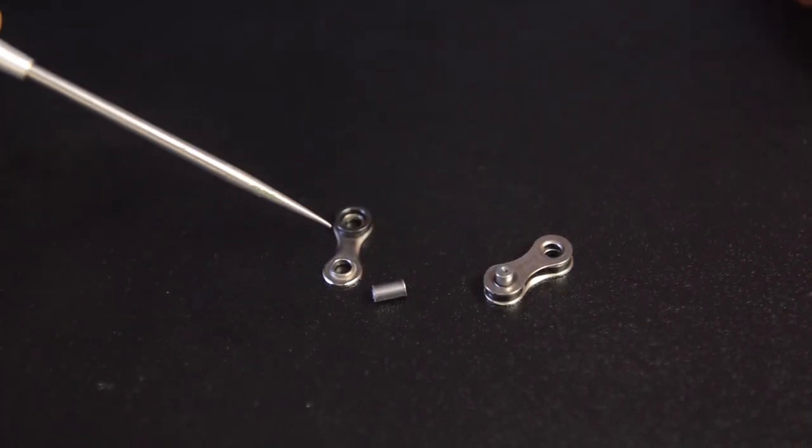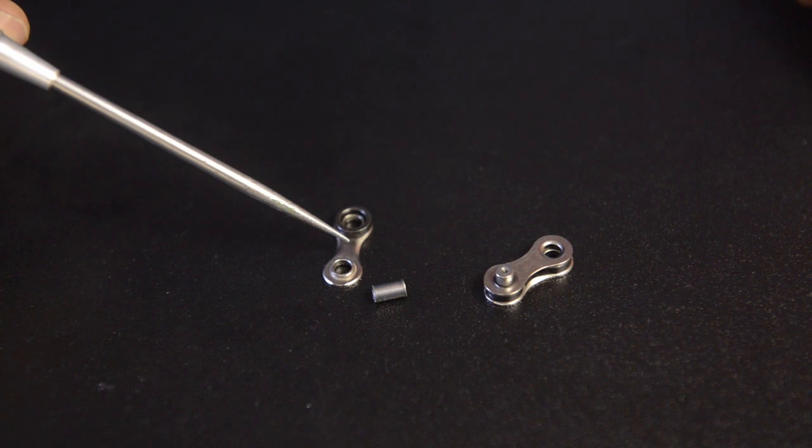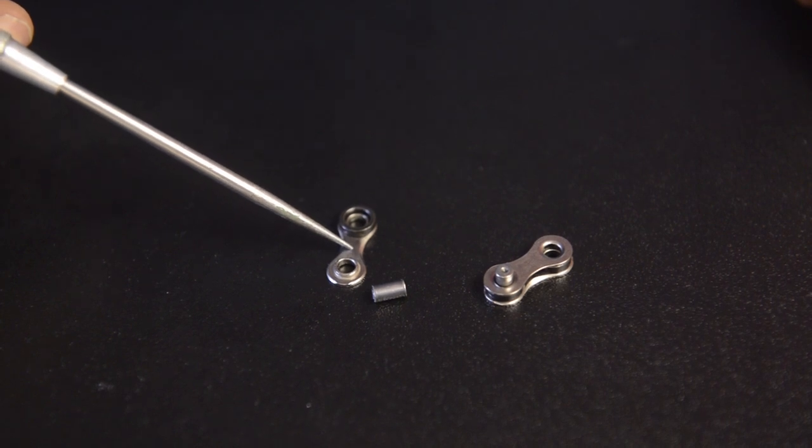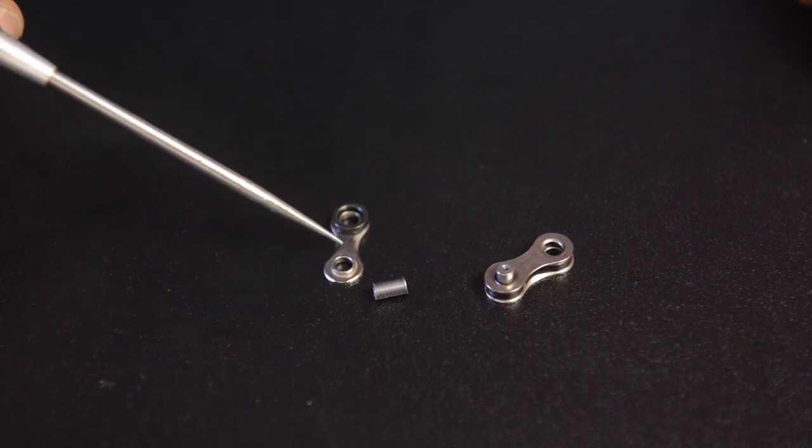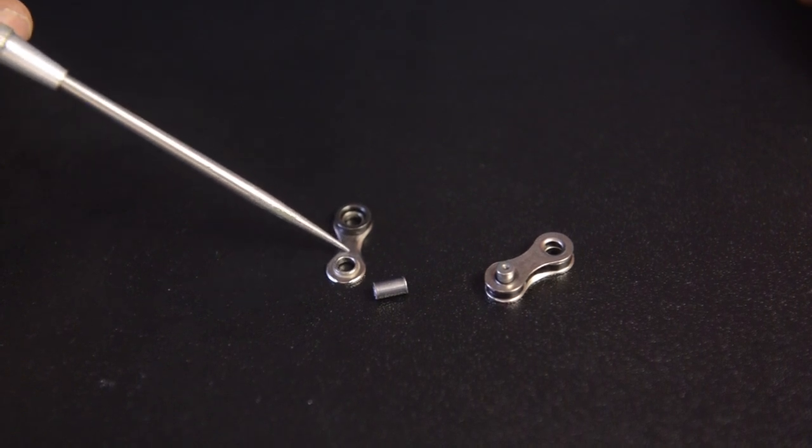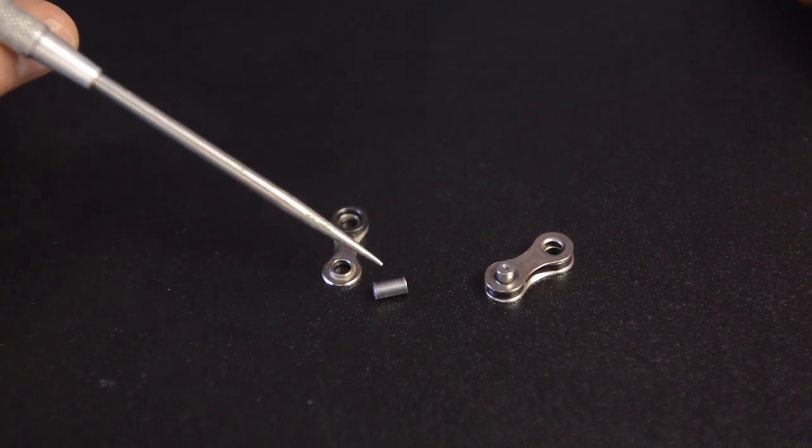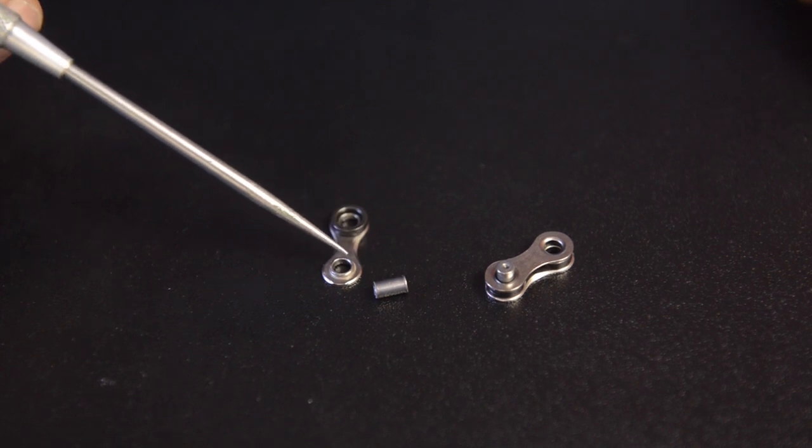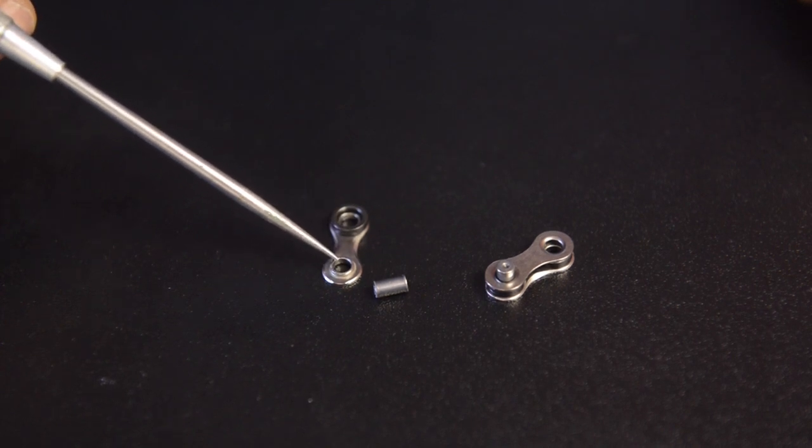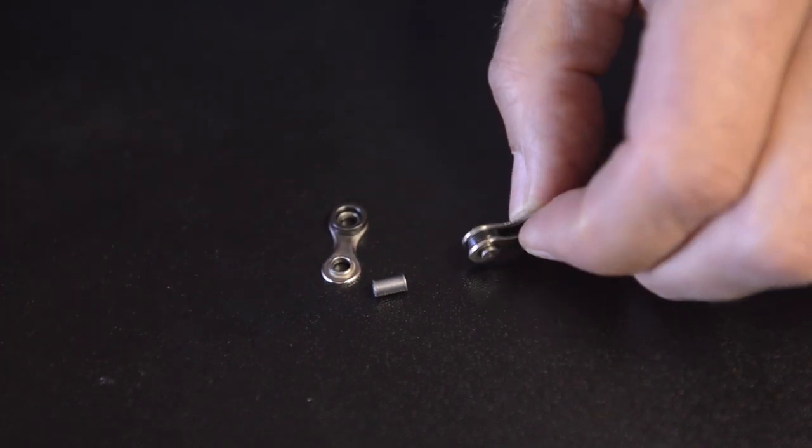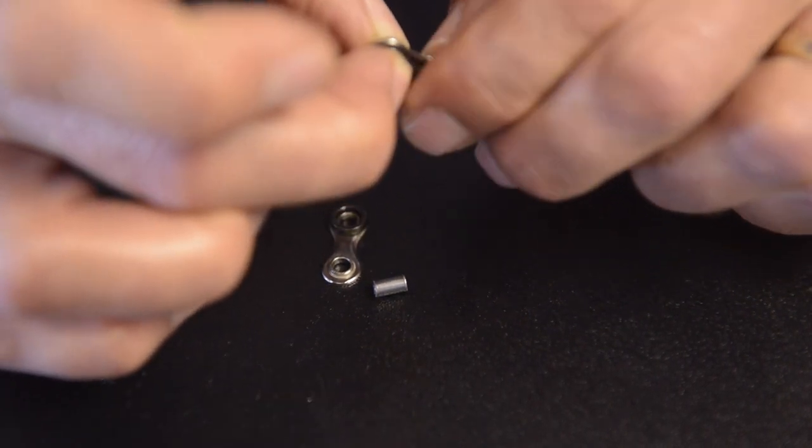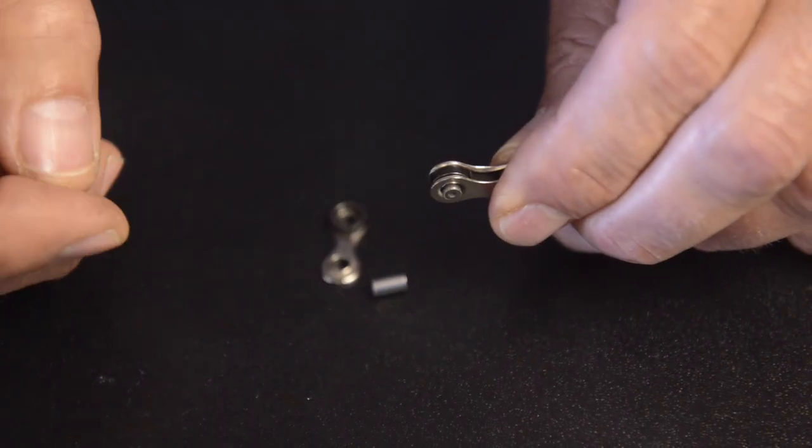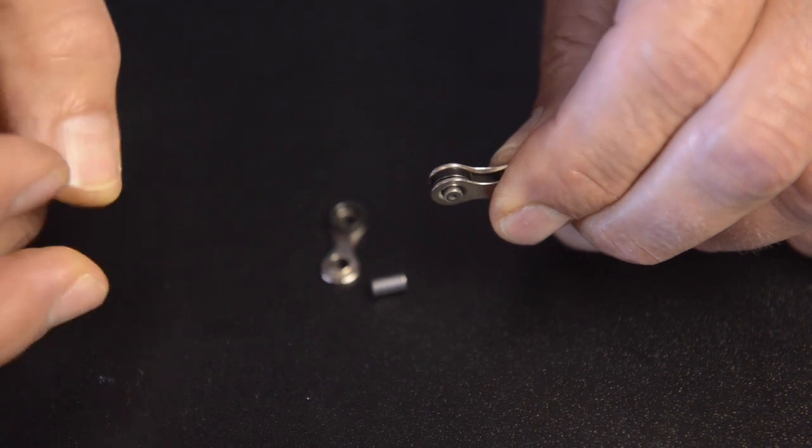The best Connex chains employ a stainless steel inner link. Stainless steel wears longer than conventional steel. The combination of a stainless steel inner link, a highly polished hardened pin, and a very constant interior radius on the collar means you don't get the wear that you would otherwise get, and Connex chains are the longest wearing chains on the market.